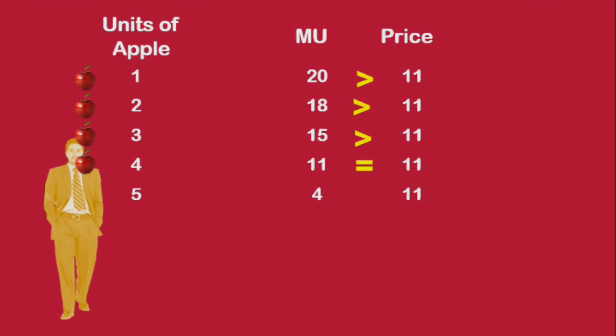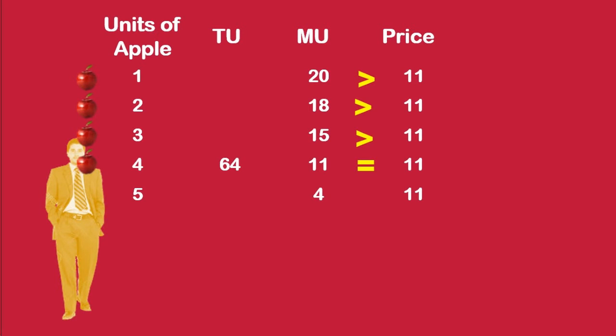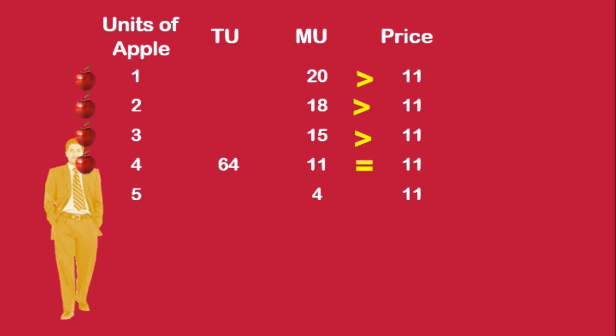The consumer is in equilibrium. His total utility is maximum. It is 20 plus 18 plus 15 plus 11, which equals 64 units. At equilibrium, marginal utility is also diminishing.